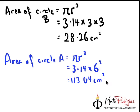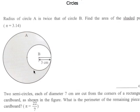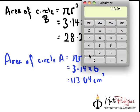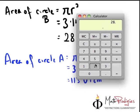So that's the area of circle A. Now, how do we find the area of the shaded part? Area of circle A minus area of circle B. So let's just take out our calculator again. Basically, the area of the shaded part equals to 113.04 minus 28.26, which gives you 84.78.